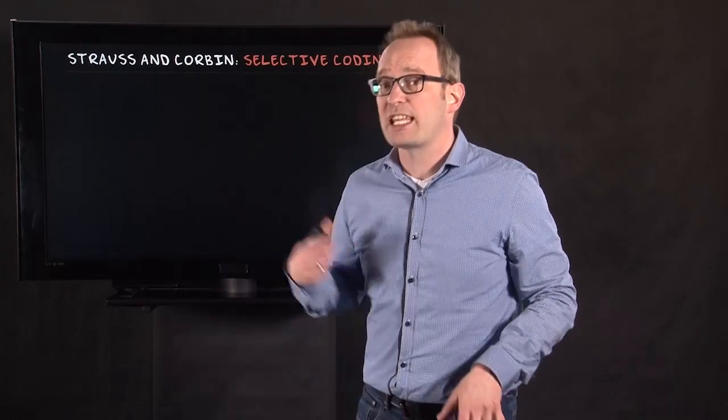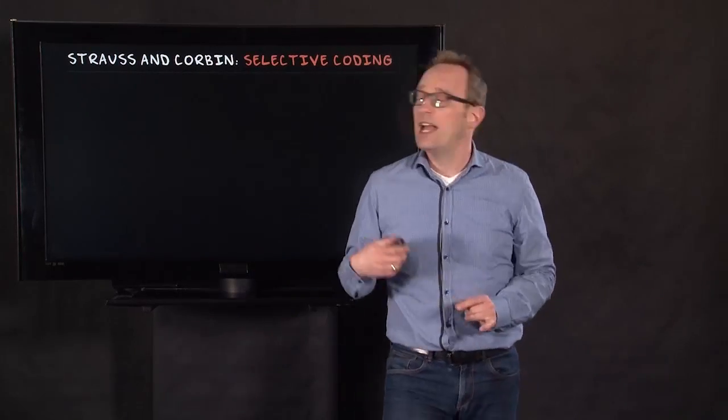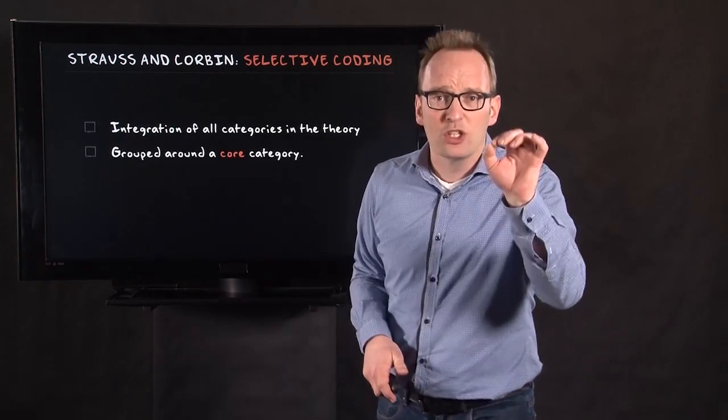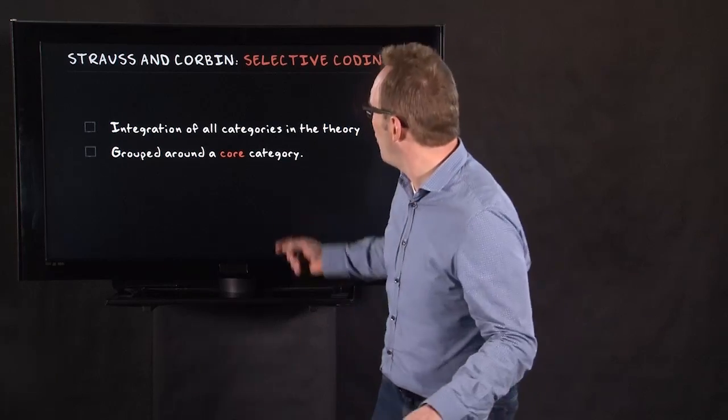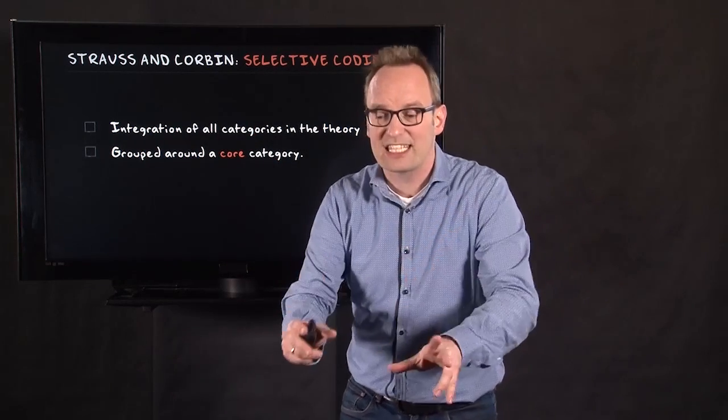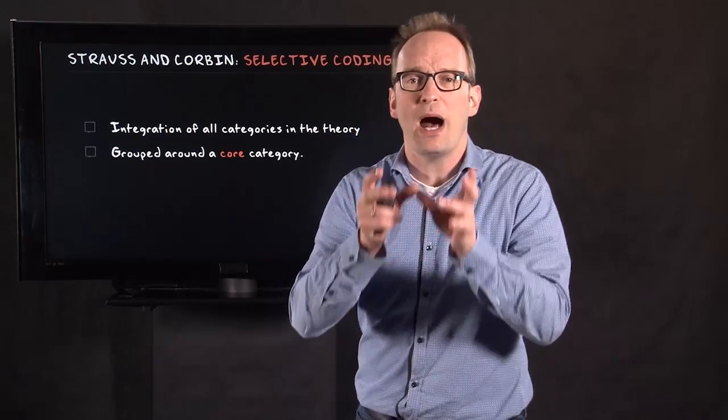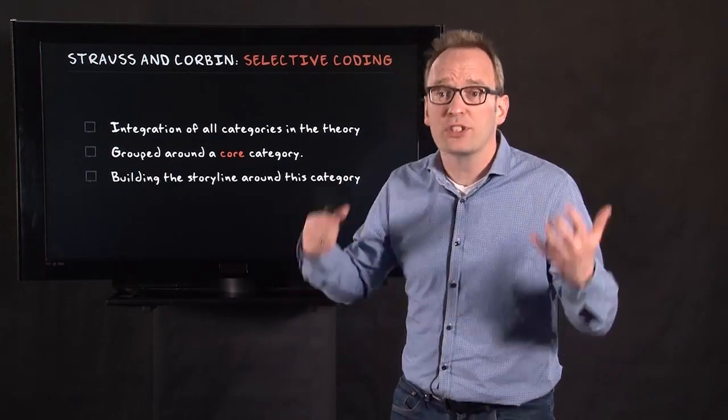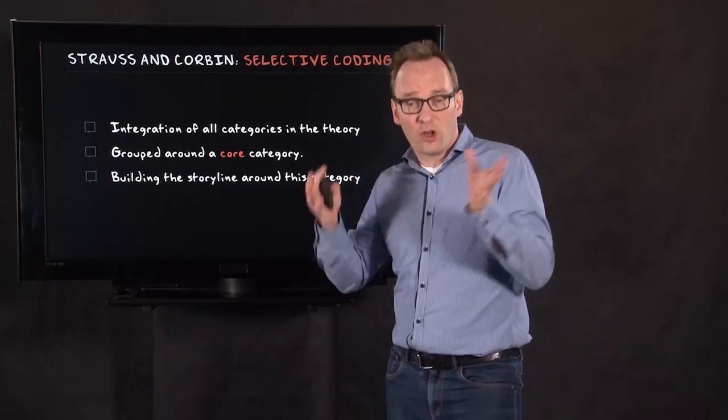Now the third step in Strauss and Corbin is what they call selective coding. You select a certain core category. You try to integrate all your categories, relate and link them to each other and say, well, it's actually about this. And then this core category becomes the storyline of your theory.